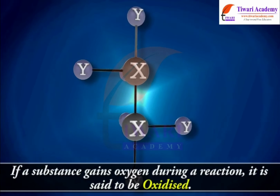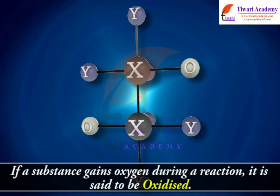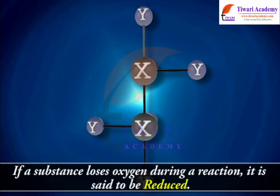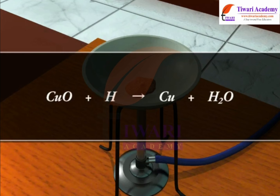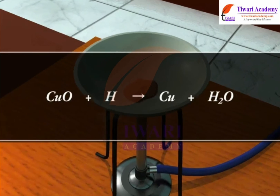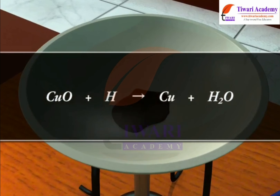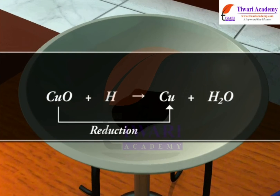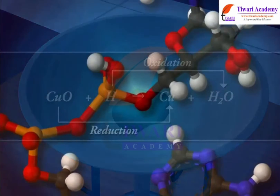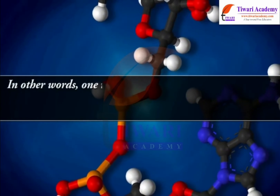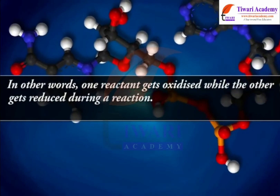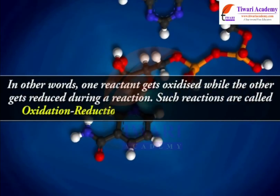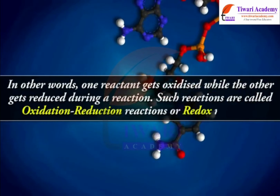If a substance gains oxygen during a reaction, it is said to be oxidized. If a substance loses oxygen during a reaction, it is said to be reduced. In this reaction, copper(II) oxide is losing oxygen and is being reduced, while hydrogen is gaining oxygen and is being oxidized. When one reactant gets oxidized while the other gets reduced, such reactions are called oxidation-reduction reactions, or redox reactions.